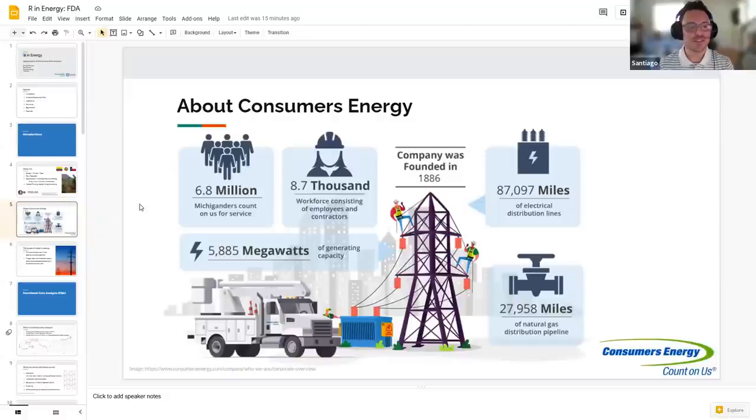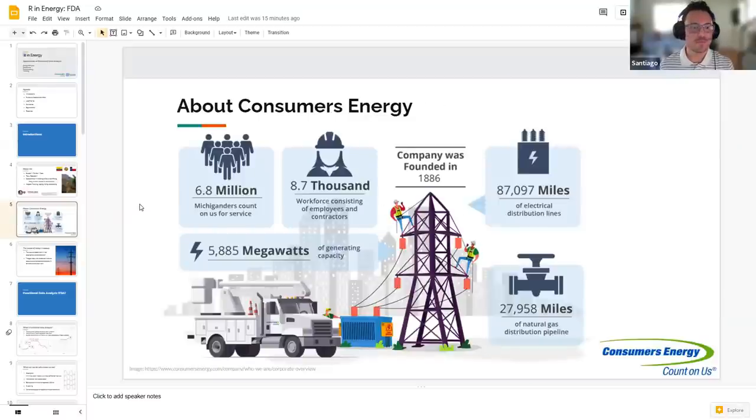I want to introduce Consumers Energy. They're sort of the sponsor of the data for this presentation. It's a public utility founded in Michigan. They serve the majority of Michigan's residents and have a generation capacity of about six gigawatts. And then about today, my talk will be primarily descriptive, non-technical. We won't get into math or code, really. It's all about what is functional data analysis and how can you use it? What are applications? And my goal today is to introduce this relatively young branch of statistics and then show you that it has value, that it can add value, that it's worth your time to explore and maybe learn as well.